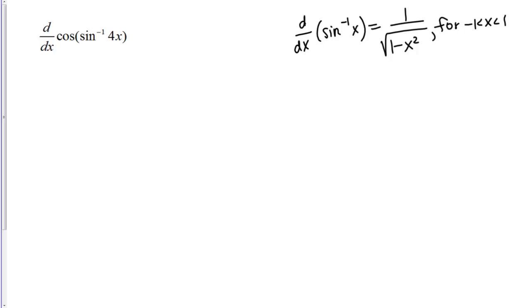That's because if you plugged in, for example, 2, then you'd get a negative under the square root in the bottom. That would not be a real result. This is only for x's between negative 1 and 1.